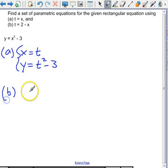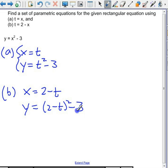Now, b. If t equals 2 minus x, then that means x equals 2 minus t. And I'm going to put that in for y. So y will equal (2 minus t) squared minus 3.